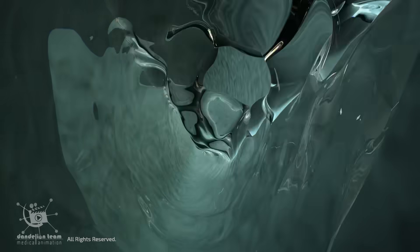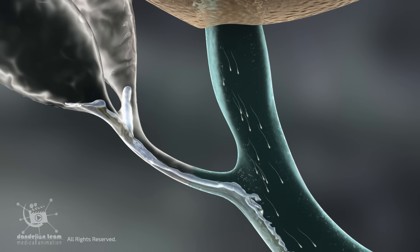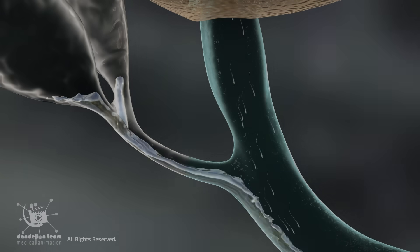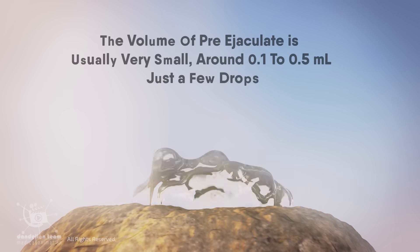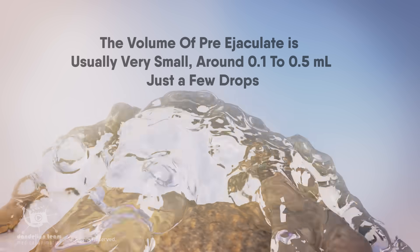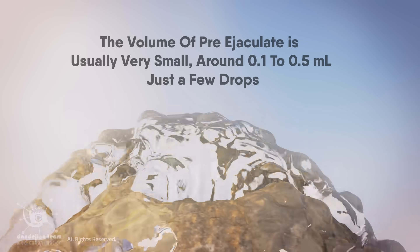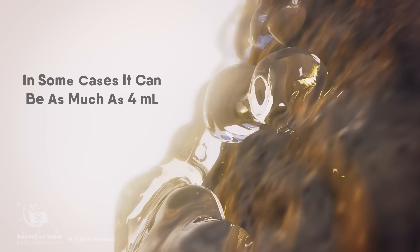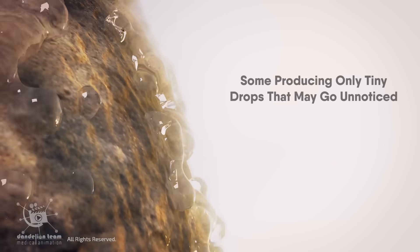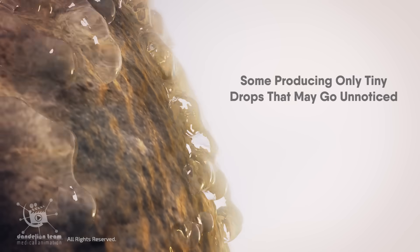While pre-cum usually does not contain sperm, a proportion of men may leak motile sperm in their pre-ejaculatory fluid. The volume of pre-ejaculate is usually very small, around 0.1 to 0.5 milliliters, or just a few drops, though in some cases it can be as much as 4 milliliters. The amount of fluid released from the Cowper's glands can vary significantly between men, with some producing only tiny drops that may go unnoticed.